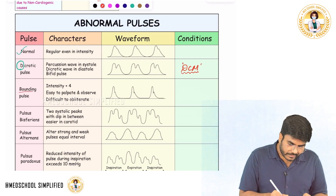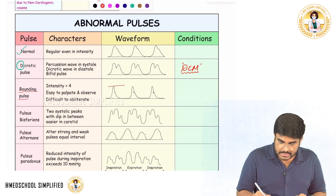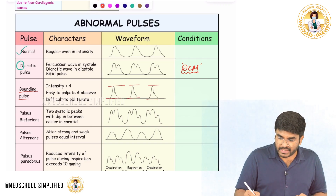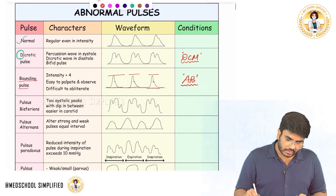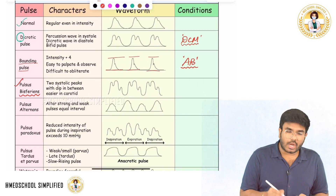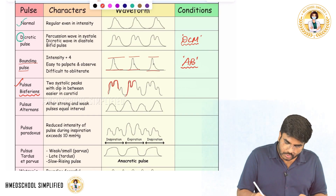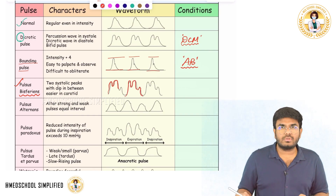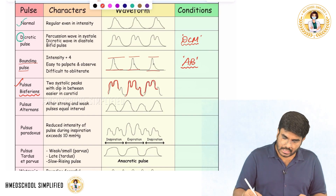Next, bounding pulse. A bounding pulse is a fast-rising, fast-falling pulse. Bounding pulses are seen in patients with aortic regurgitation. Next, pulsus bisferiens. These are abnormal pulses. Pulsus bisferiens means during systole you are having two peaks — two systolic peaks. This is called pulsus bisferiens, and it is also seen with aortic regurgitation.